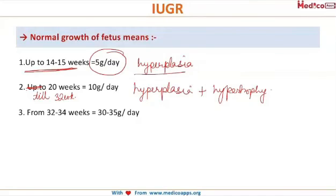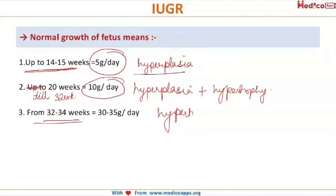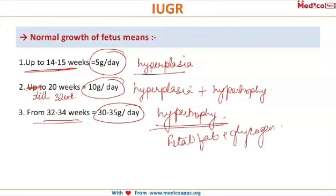In the second phase, weight increases by 10 grams per day. From 32 to 34 weeks till term, there is majorly hypertrophy of the cells, and the increase in weight is around 30 to 35 grams per day. It is during this phase that most of the fetal fat and fetal glycogen are accumulated.